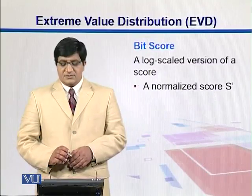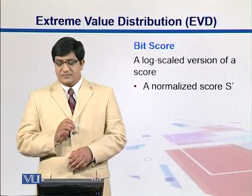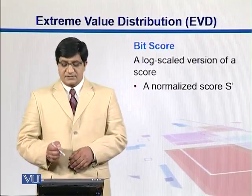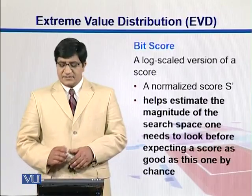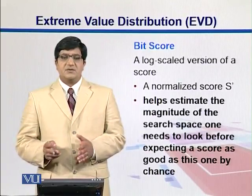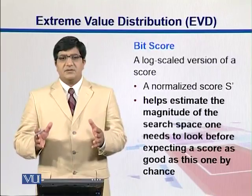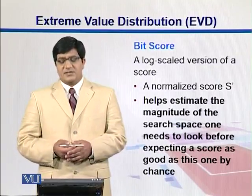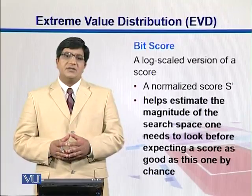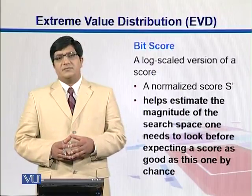There is another concept called the bit score. We take the score — calculated using Bayesian equations as S-dash from our probability sections — and normalize it to log base 2. That is called the bit score. It helps estimate the magnitude of the search space one needs to look through before expecting a score this good by chance, giving an idea of how many sequences are needed to assess whether a match occurred by chance.